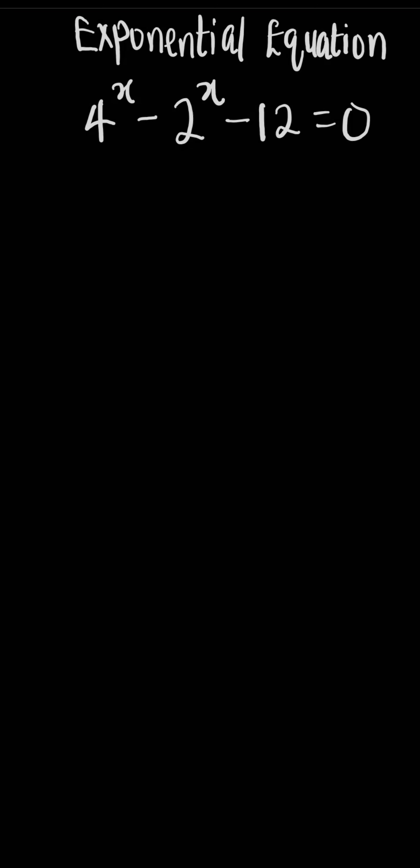To solve this exponential equation, we can rewrite 4 as 2 to the power of 2x minus 2 to the power of x minus 12 equals 0.